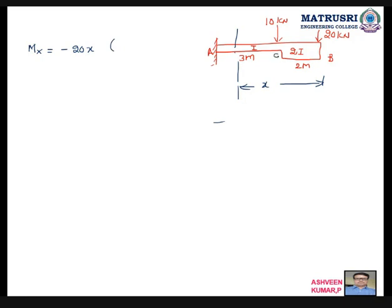A to B. Say suppose if I am taking this is C, so B to C, understood? B2, say I am taking. Then one more Mx, one more Mx. Mx is equal to minus 20x minus 10 into, 10 into this is x, this is x minus 2, x minus 2.